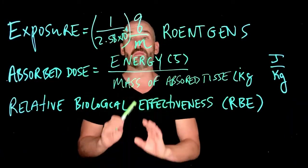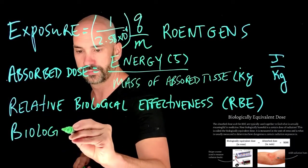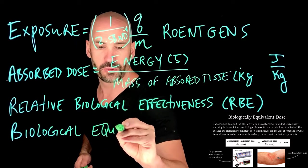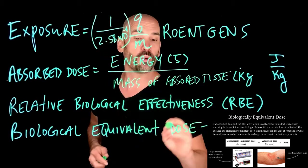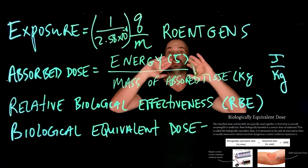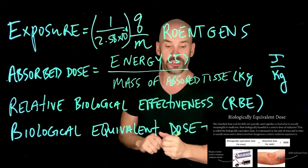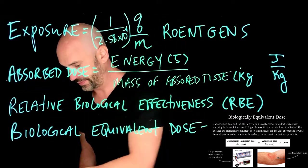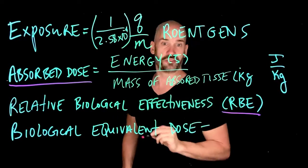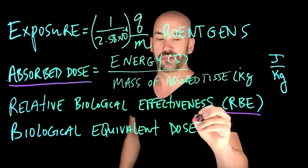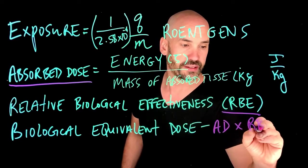Finally, the most relevant for us is called the biological equivalent dose. Why is this the most important for us? Because this is really what it comes down to in terms of the harm done to living tissue and living organisms as a result of radiation. This is really just the absorbed dose times the relative biological effect.